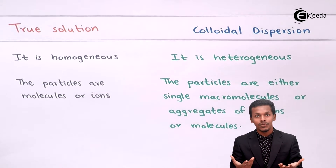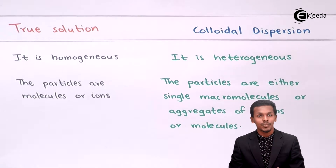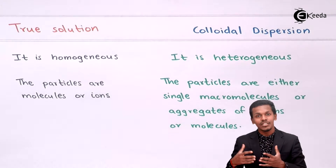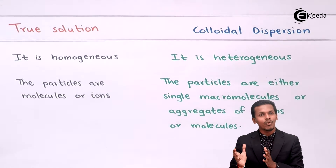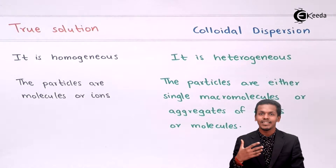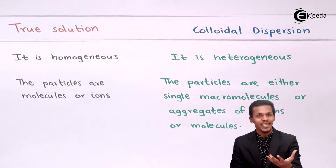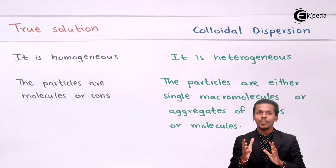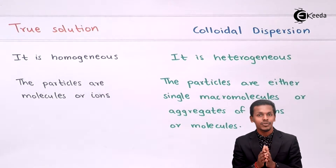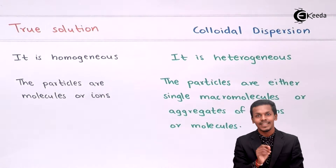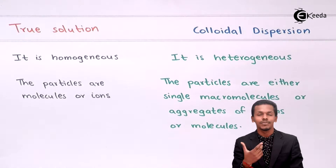For example, starch can be called a colloidal dispersion because it is made up of multiple proportions of carbohydrates, forming a macromolecule with higher molecular weight — like proteins. While we cannot differentiate between a true solution and a colloidal dispersion just by looking at them, the properties and criteria — including particle size — allow us to distinguish them. This is the second point.